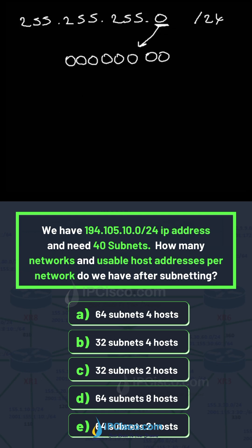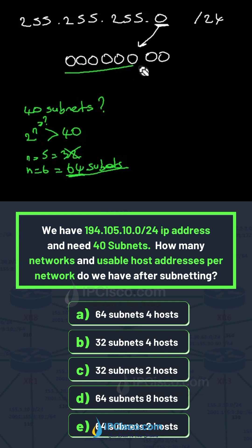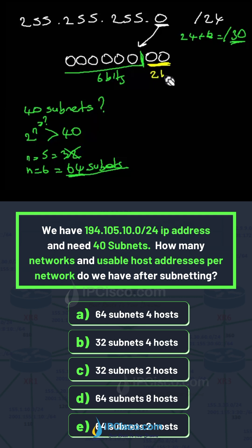For 40 subnets, what do we need? 2 to the power of n must be bigger than 40, and here n is 6. So 2 to the power of 6 is 64 subnets — these are our network bits. When we add these network bits to the 24, we find the new CIDR value of /30.